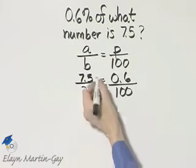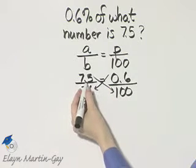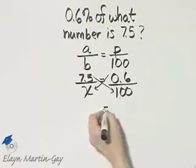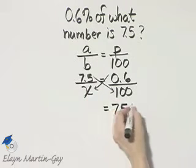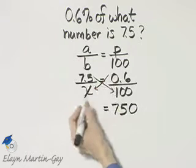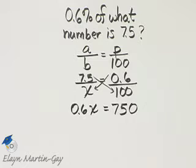And we can solve by then, since this is a proportion, equating cross-products. Seven and five-tenths times 100, that would be, moving the decimal point two places to the right, 750, and here I have six-tenths times x, or six-tenths x.